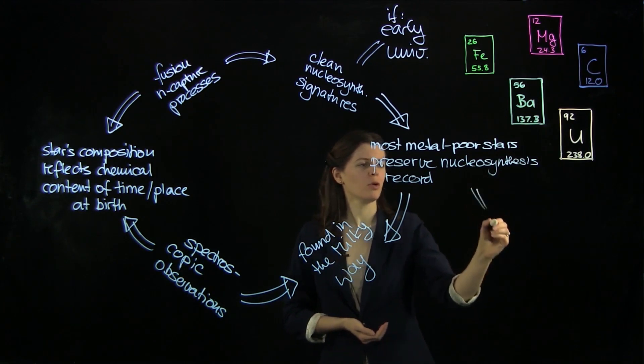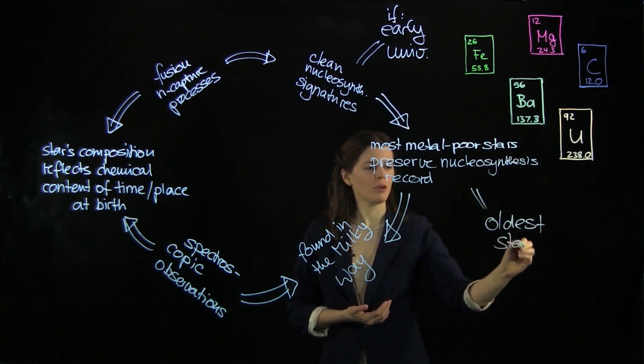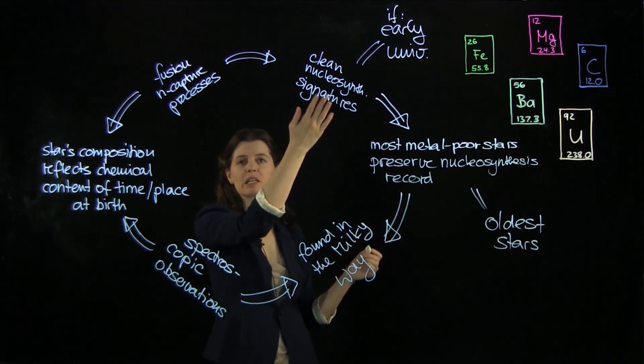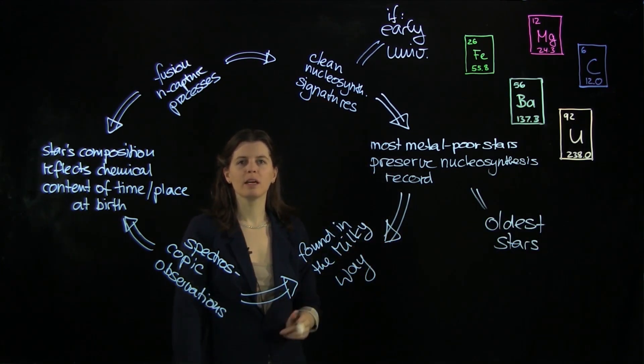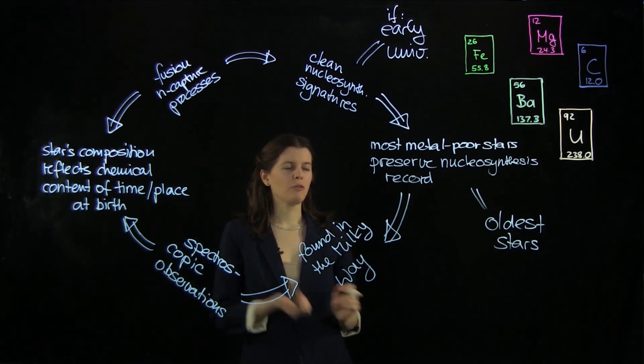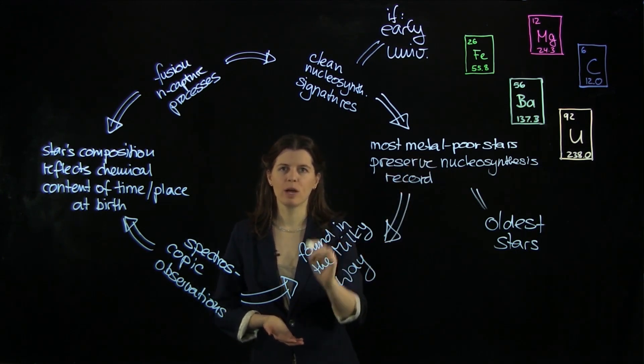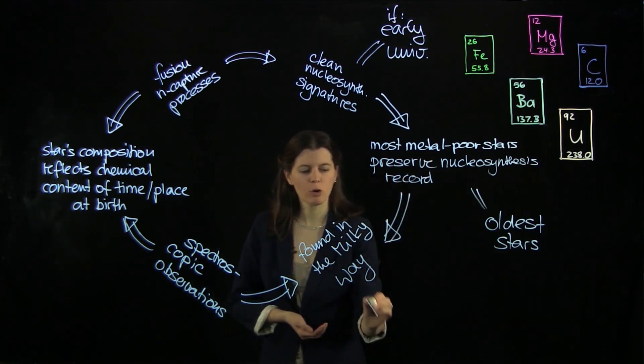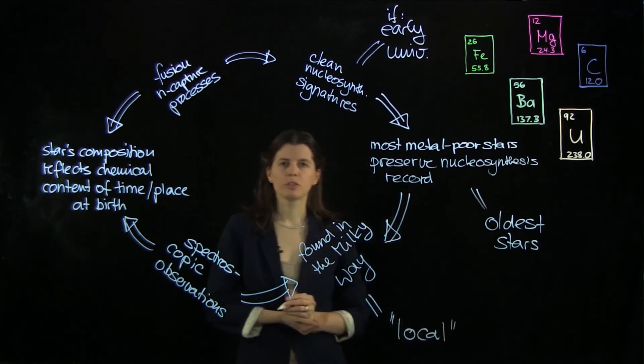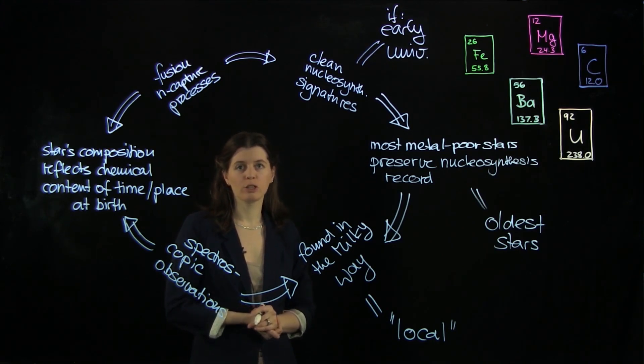So here we have the oldest stars and one reason why we can infer that these stars must be very old is because if they weren't, we wouldn't get these very clean signatures that were only present at the earliest times. Now the very fortunate coincidence for us is that these older stars are actually found in the Milky Way today. So they are fairly local objects and that is a great advantage over very distant galaxies that are also often used to study the early universe.